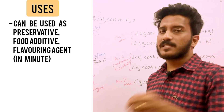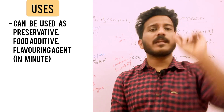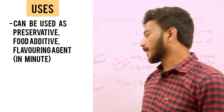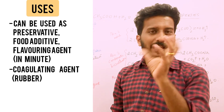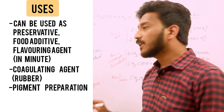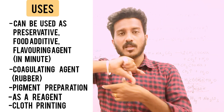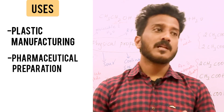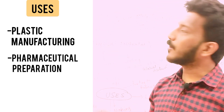Uses of Ethanoic Acid: In lower concentration — very low concentration — it can be used as a food additive. You can add 1-2 ml of vinegar. It is used as a food additive, flavoring agent, and preservative. It is also used in rubber production and as one of the ingredients in medicine preparation.